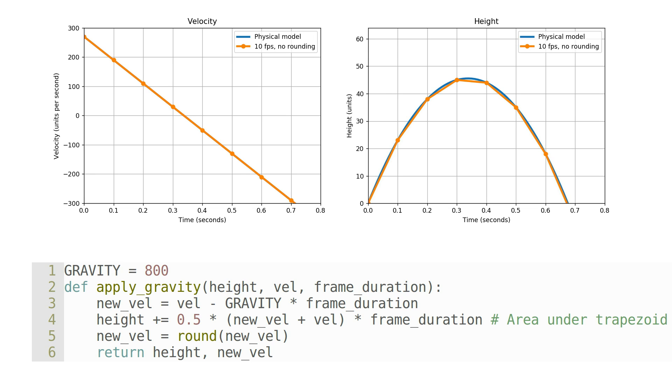However, there is an extra step at the end of each update which is the key to Quake 3's frame-rate-dependent physics. In order to reduce network bandwidth, at the end of every frame, the velocity is rounded to the nearest whole number.